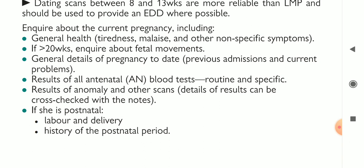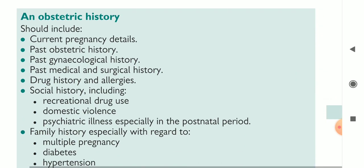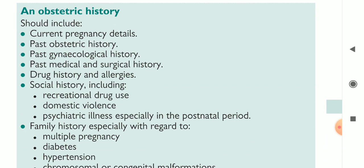We ask about the delivery, complications of delivery, and the history of the postnatal period — for example, whether delivery was normal and whether the third stage of delivery was normal or complicated. Complications such as postpartum hemorrhage, severe bleeding, or lacerations of the genital tract must be taken into consideration.